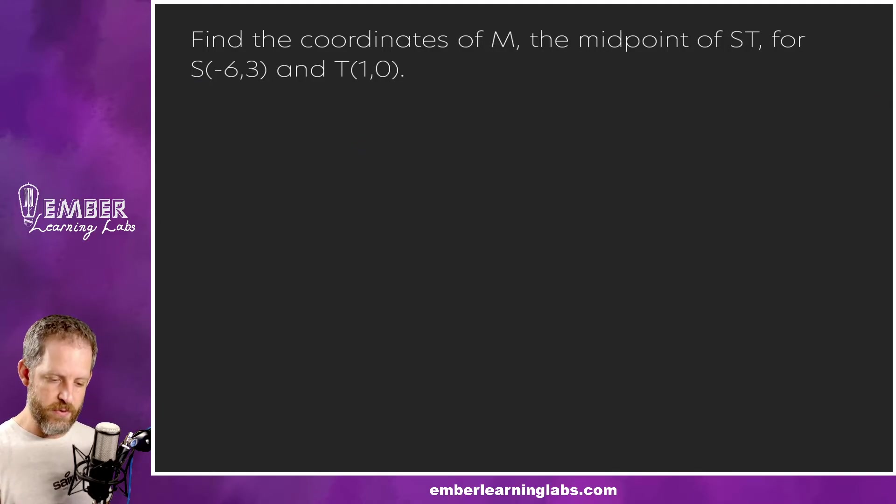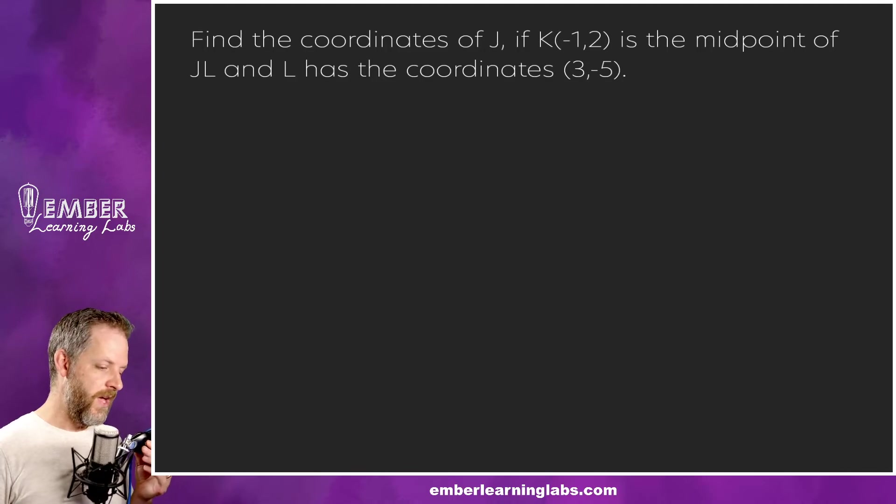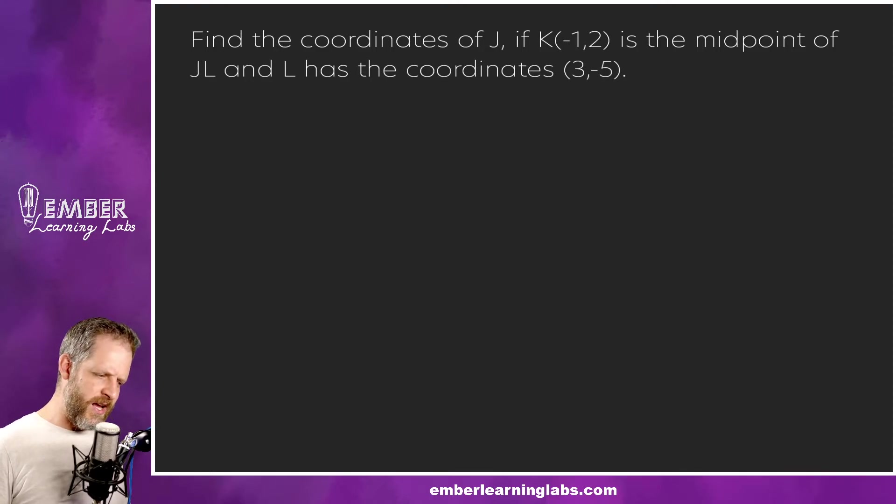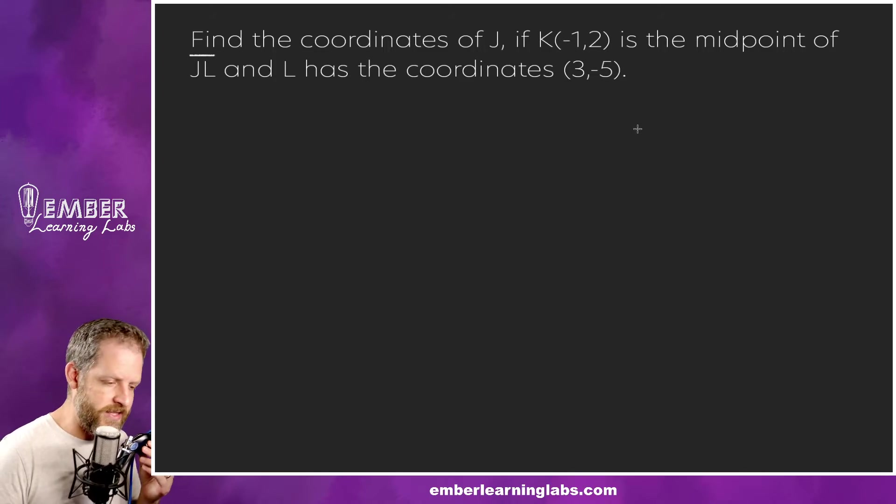Let's look at another example. We're going to do three total examples. One of them is going to be a lot like a problem that I told you about in the last video. So this one is a little bit different. We're going to find the coordinates of J if K is the midpoint of JL and L has a coordinates of three, negative five. So this is a little bit different. Let's kind of unpack this one because this one's a little bit brain bending. We're actually going to draw a picture of this one because it's going to help us.